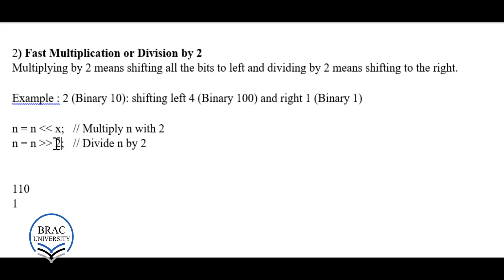You don't need to manually convert numbers to binary. You just write the regular number — for example, 15 or 16 — and the computer internally converts it to binary, performs the bitwise operation, and returns the result in decimal. You don't need to worry about the binary representation; I'm just explaining how it works internally.